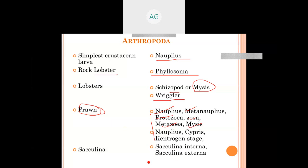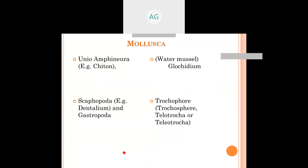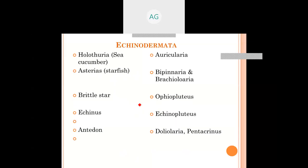In Crustacea there is also Circulina interna and Circulina externa. Arthropods show a lot of diversity in larval forms. In Mollusca, an important larva is the Glochidium larva in Unionidae and Pinnularia. In Gastropoda, the Trochophore larva is important.